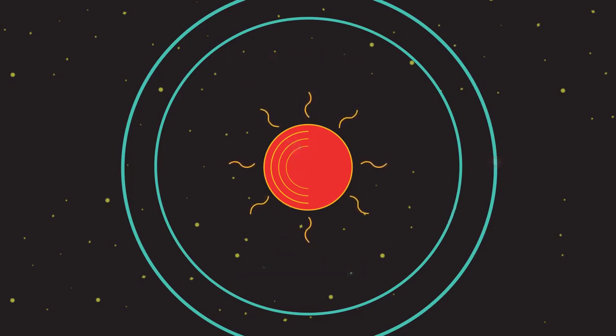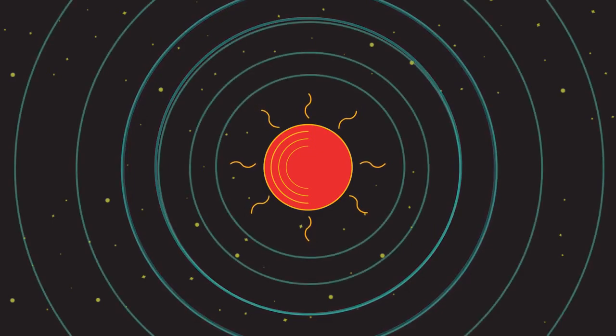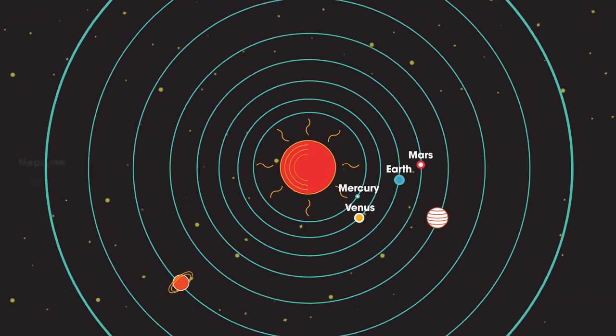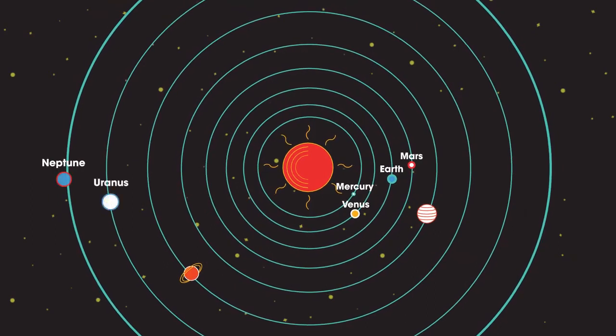This means that objects in small orbits, such as the inner planets Mercury, Venus, Earth, and Mars, travel faster than objects in larger orbits like Neptune or Uranus. Now isn't that all out of this world? Get it?